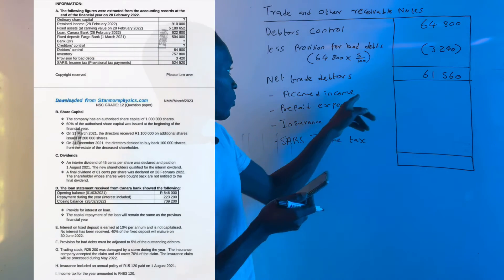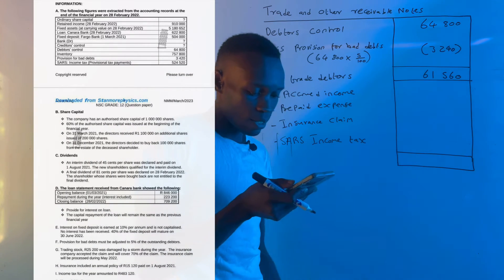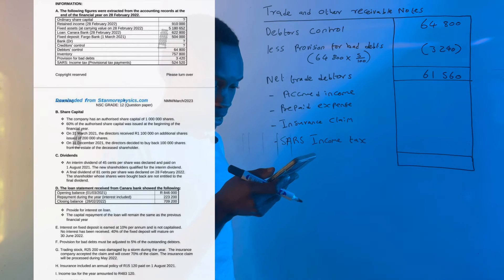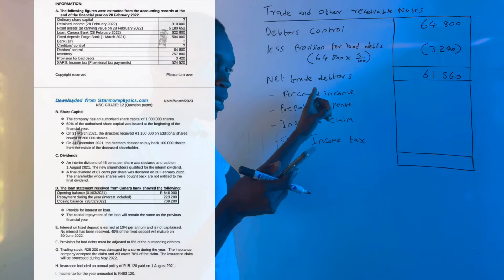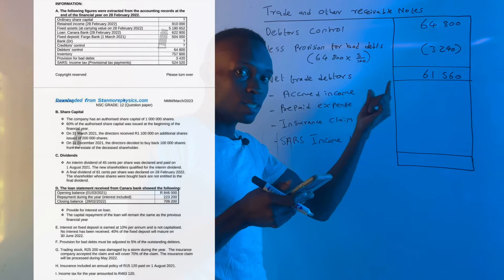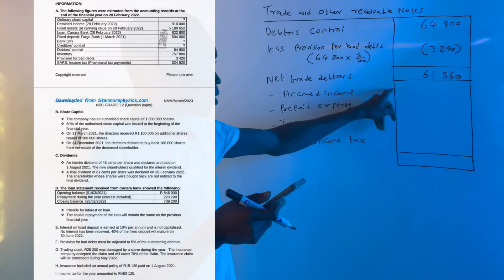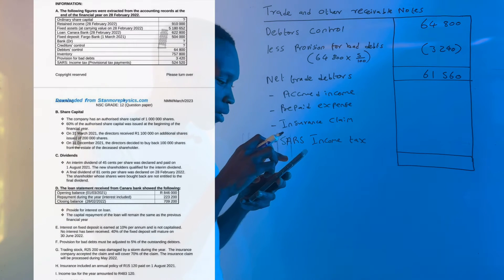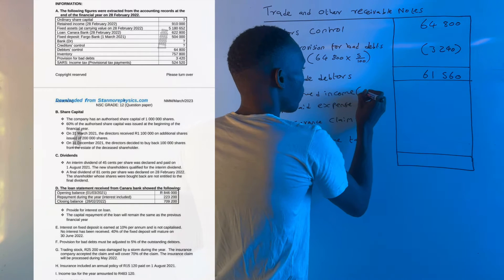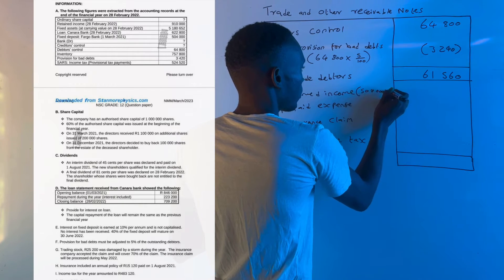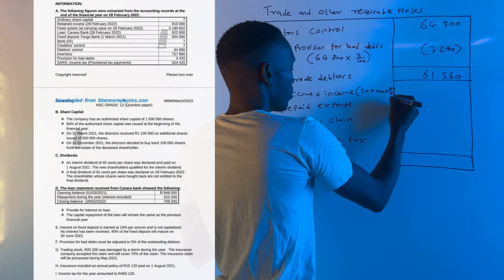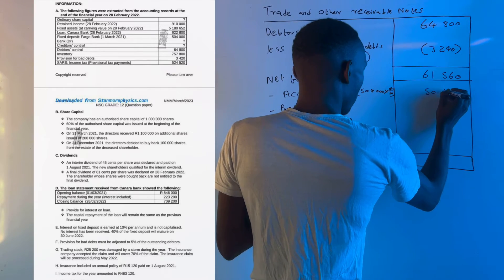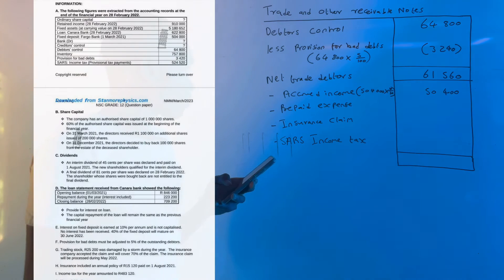Let's identify accrued income first. Transaction E states that interest on a fixed deposit is earned at 10% per annum and is not yet capitalized — no interest has been received. This means there is accrued income; the bank still owes us this interest. We calculate: the fixed deposit amount of R504,000 multiplied by 10%, giving us accrued interest income of R50,400.